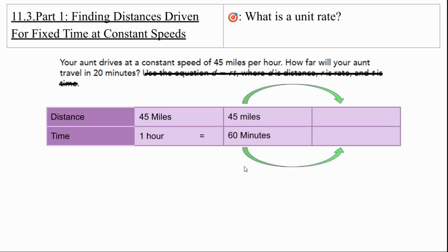But what we need to figure out is this relationship here. We're going to do the same thing to both sides. We need to know it's got to be 20 minutes. How many miles in 20 minutes? When we look at that relationship between 60 and 20, it's getting smaller, which is division. We're going to divide both sides by 3. And 45 miles divided by 3 is 15 miles. So your aunt's going to travel 15 miles in 20 minutes.